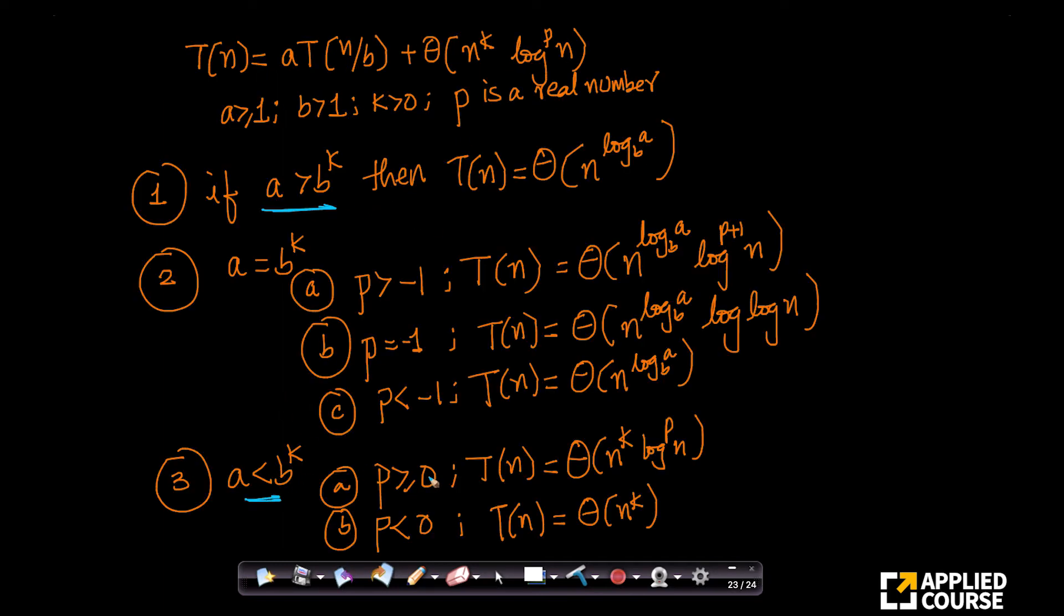Now, let us see whether p is greater than equal to 0 or less than 0. What do we have? We have p equals 0. The moment you have p equals 0, what do you have? You have this form. Let us write down this form.